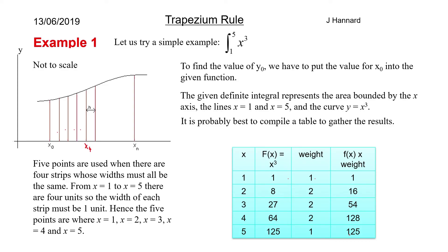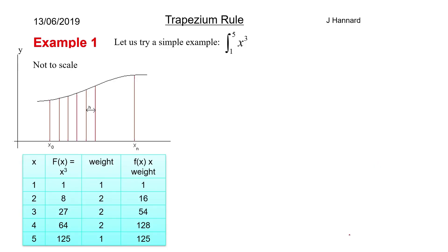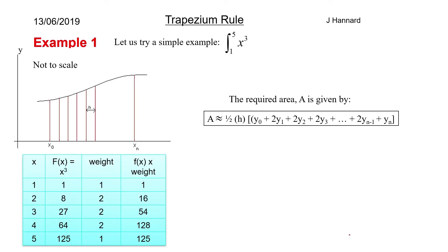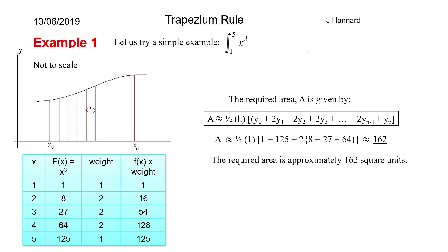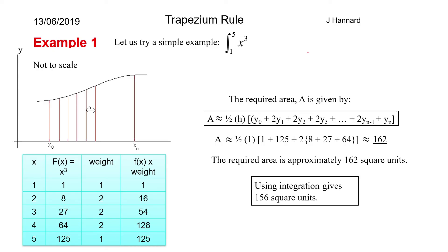We add those products together and multiply by ½ and H. The required area is approximately ½ × H × (1 + 16 + 54 + 128 + 125). Since H = 1 (we go up in ones), we get ½ × 1 × 324 = 162 square units. Using direct integration — adding 1 to the power, dividing by the new power, evaluating at 5 and 1 — gives 156. So 162 is a pretty decent estimate.